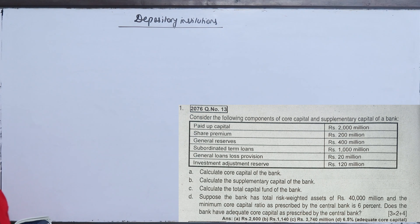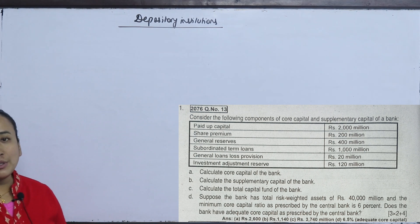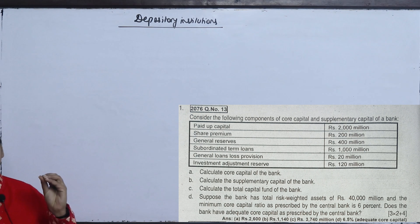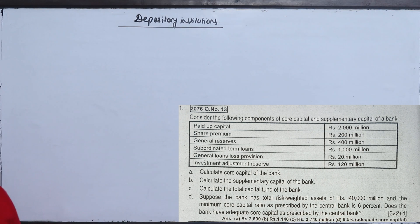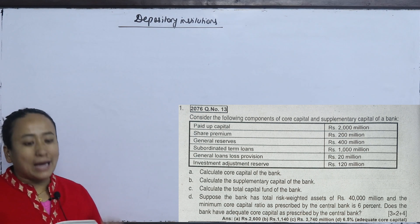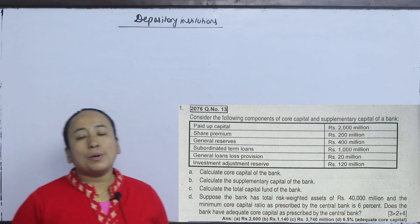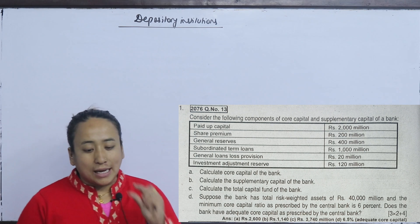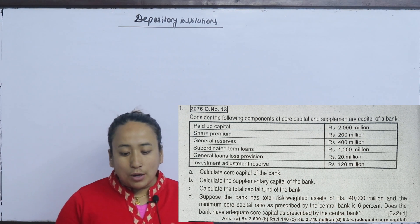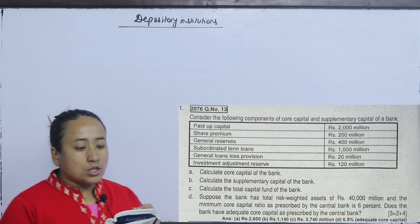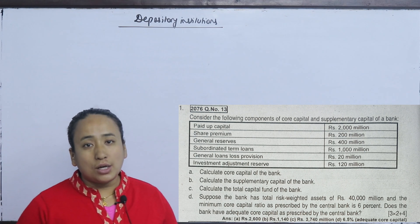Consider the following components of core capital and supplementary capital of a bank. Paid-up capital is core capital. Share premium is core capital. General reserve is core capital. Subordinated term loan, general loan provision, and investment adjustment reserve are supplementary capital.